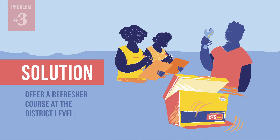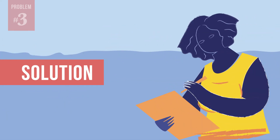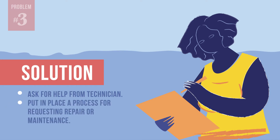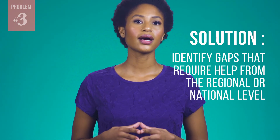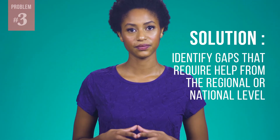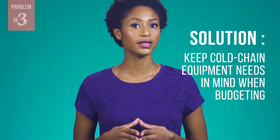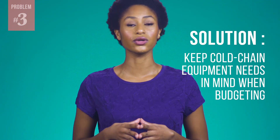It is possible that a health facility refrigerator needs more than basic maintenance. For bigger problems, health workers will need to ask for help from a district manager or a cold chain technician. Put in place a good process for staff to request repair or maintenance. When you begin thinking through potential problems and solutions, you may identify other gaps in your program that require help from the regional or national level. For example, do you have an available repair technician? Does the technician have time and spare parts for all the necessary repairs? Keep your cold chain equipment needs in mind when it is time to plan your next year's budget.